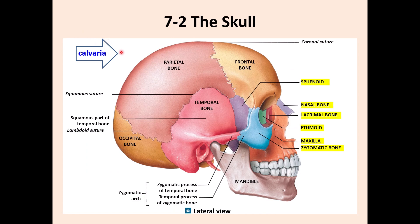One terminology to know is calvaria. Calvaria is the frontal bone, parietal bone, and occipital bone together. For example, in brain surgery the surgeon can cut and remove the calvaria. There is also another term called suture - a connection between two bones in the skull. They are irregular in shape, like a saw tooth. The coronal suture, like the coronal plane, separates the body anteriorly and posteriorly.